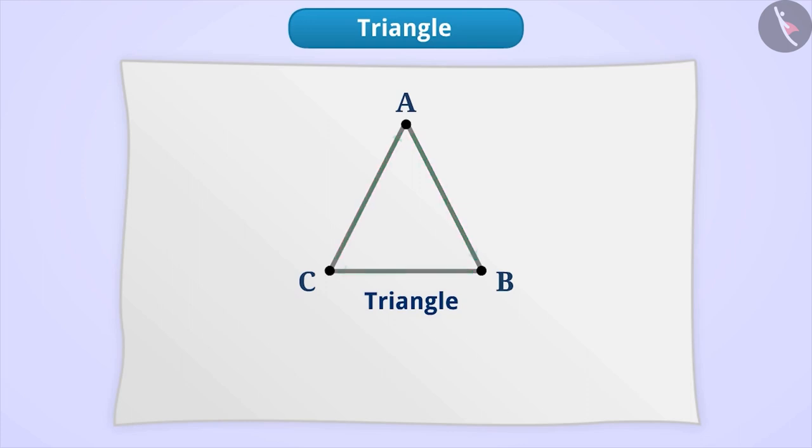The name of the triangle is written in an order such as ABC or ACB and make the triangle symbol in the beginning of the name of the triangle to represent that it is a triangle. In this way, we can read this triangle as triangle ABC or triangle ACB.